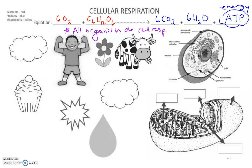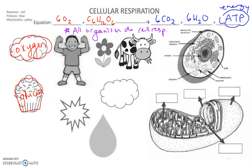So we have our reactants: oxygen and glucose. Remember, glucose is long-term chemical energy. We breathe in our oxygen and eat our glucose, and then we're going to get out our products: ATP, which is our short-term energy, water, and then carbon dioxide.